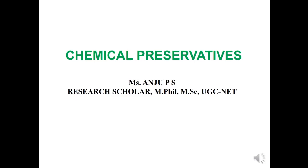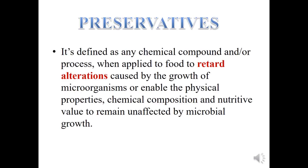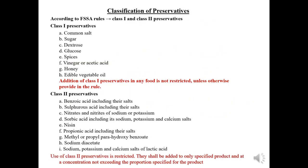Hi all, here I am taking a class about chemical preservatives. A preservative is defined as any chemical compound or process when applied to food to retard alterations caused by the growth of microorganisms, or to enable the physical properties, chemical composition, and nutritive value to remain unaffected by microbial growth. According to FSSA rules, preservatives are classified into two classes.